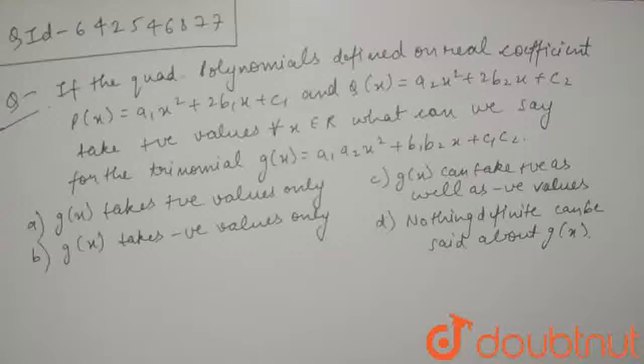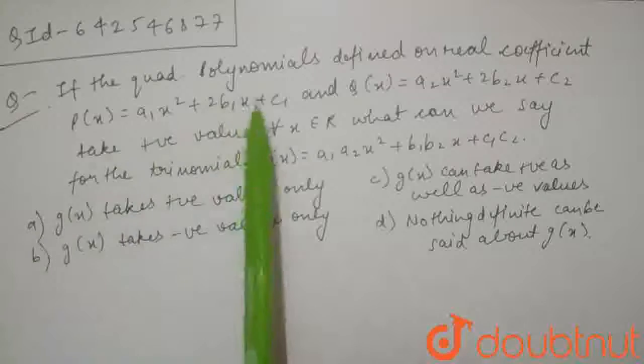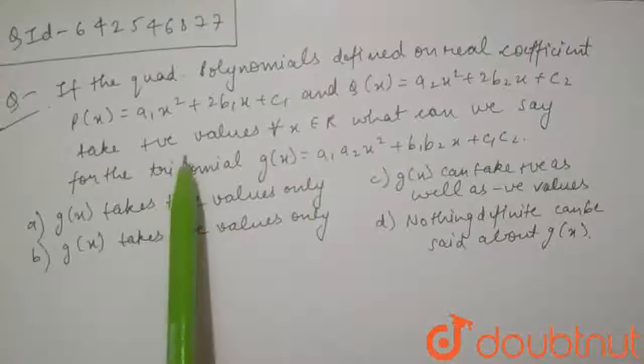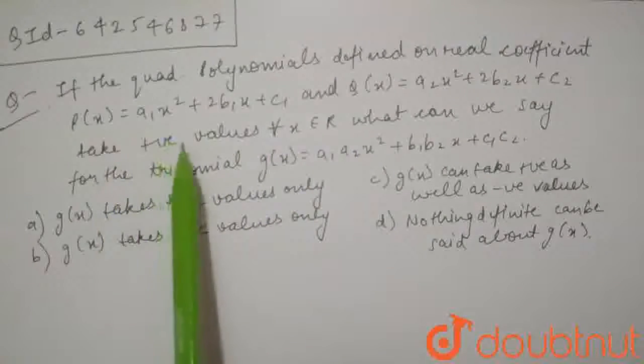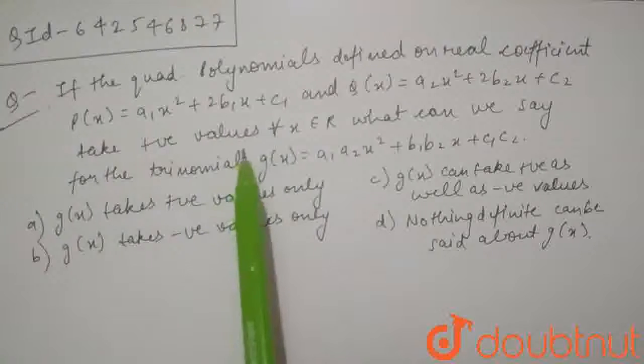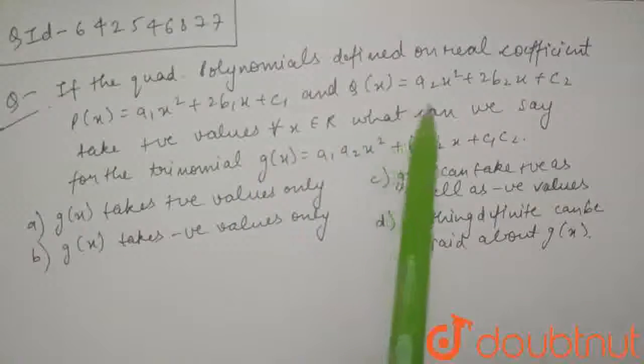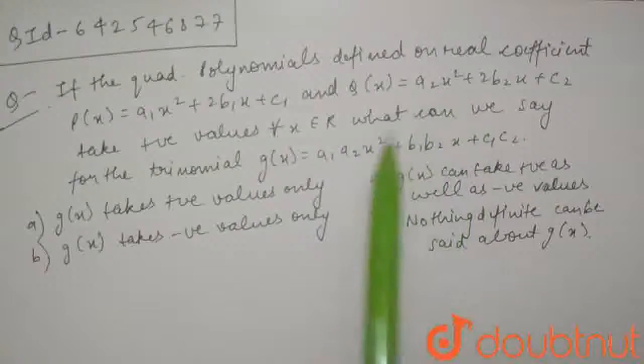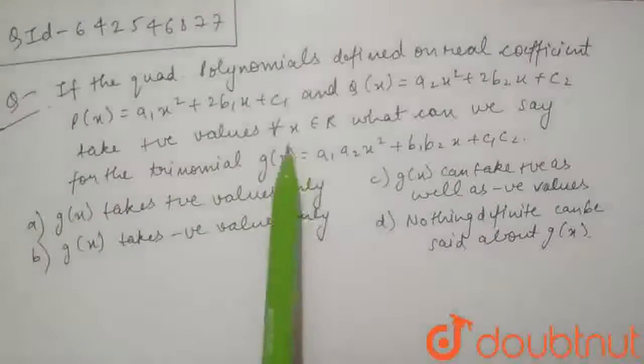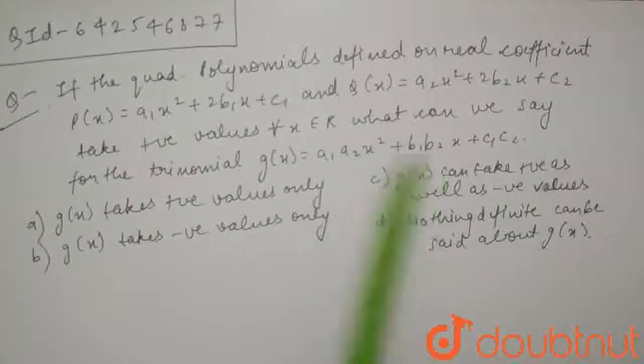Hello guys, today's question is: If the quadratic polynomials defined on real coefficients p(x) = a₁x² + 2b₁x + c₁ and q(x) = a₂x² + 2b₂x + c₂ take positive values for all x ∈ R, then what